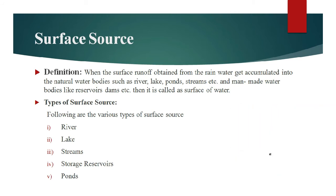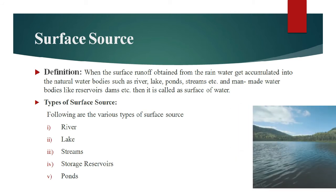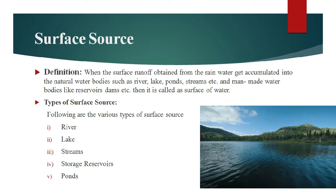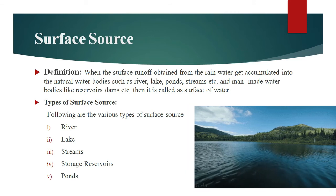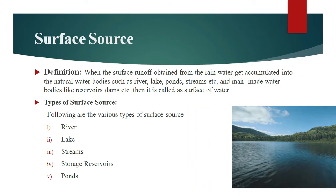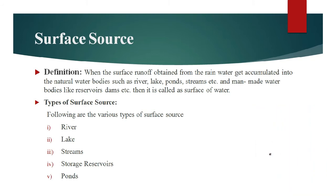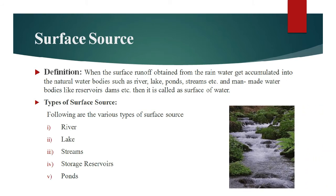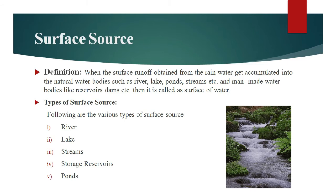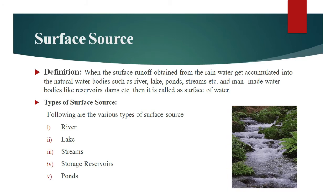When a number of streams come together or combine, the resulting combined stream is called as a river. It is the most important source of water used for public water supply schemes. The second surface source is lake. Lakes are natural large-size depressions or basins formed within the surface of earth and filled with rainwater. Third is streams — when a small amount of water flows down hills or mountainous areas, it is called as streams.